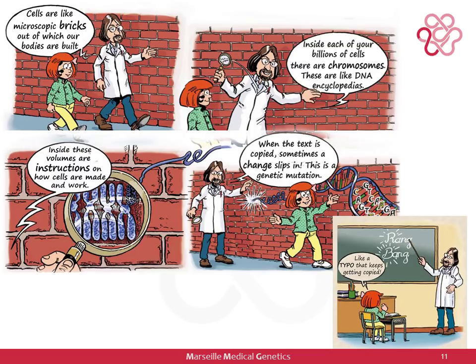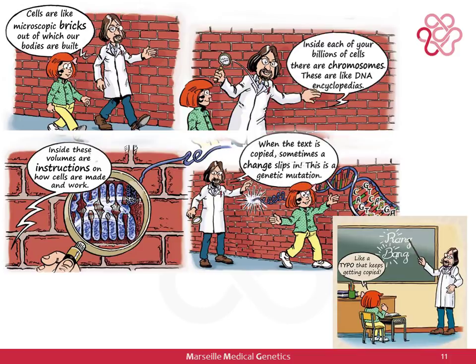The doctor illustrates how nevi develop in a fantasy manner. He shows a wall being built from bricks, explaining there's a problem that developed in the cells that color your skin — the pigment cells. Cells are like microscopic bricks out of which the body is built; inside each cell are chromosomes, which act like DNA encyclopedias. DNA transmits information on how to make cells, and chromosomes are volumes in which those instructions are organized. As cells grow and divide, the text gets copied, and sometimes a change — a genetic mutation — slips in.